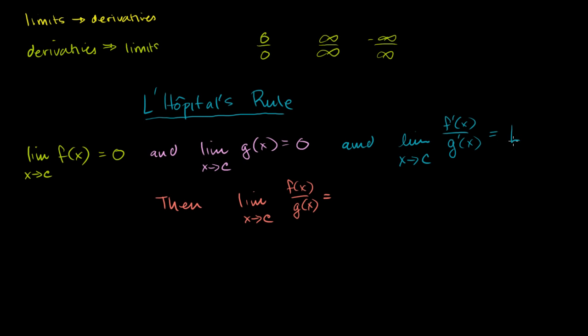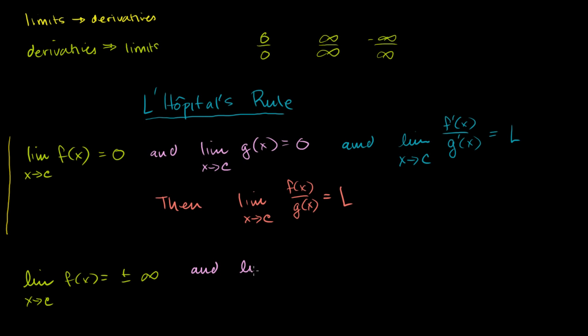This might seem a little bizarre. I'll write the other case and then do an example. The other case is if the limit as x approaches c of f(x) is equal to positive or negative infinity, and the limit as x approaches c of g(x) is also equal to positive or negative infinity, and the limit as x approaches c of f′(x) over g′(x) exists and equals L.